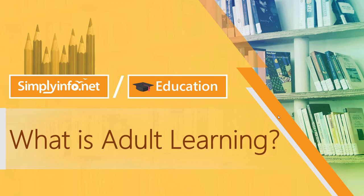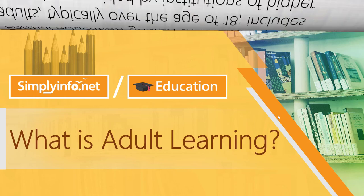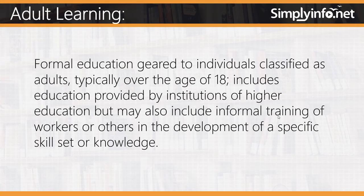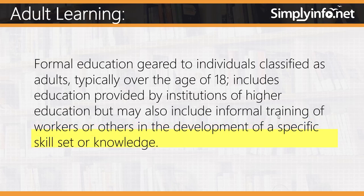What is Adult Learning? Adult Learning is formal education given to individuals classified as adults, typically over the age of 18. It includes education provided by institutions of higher education, but may also include informal training of workers or others in the development of a specific skill set or knowledge.